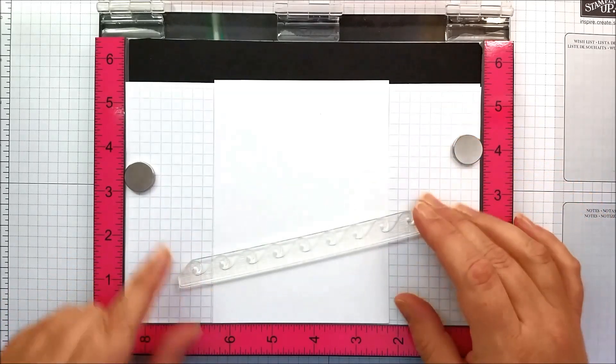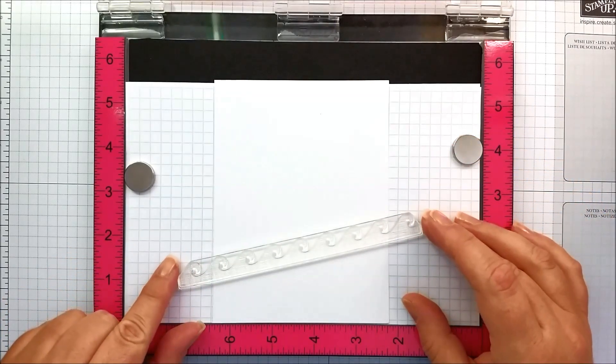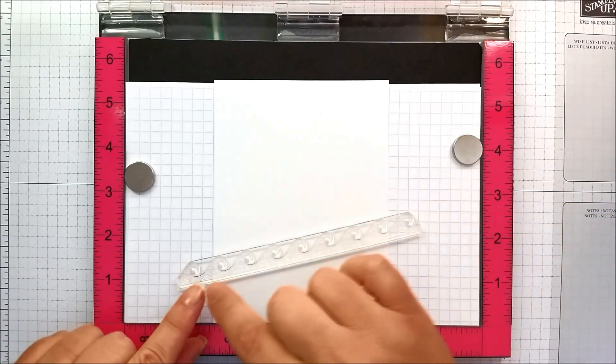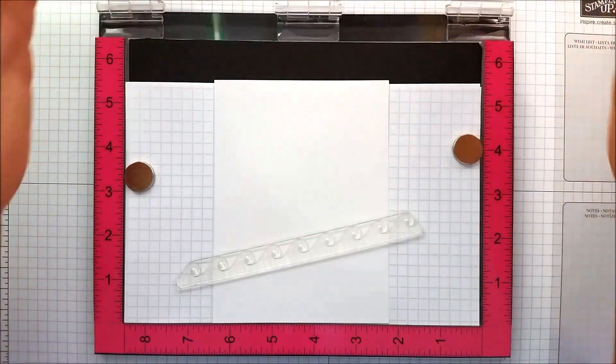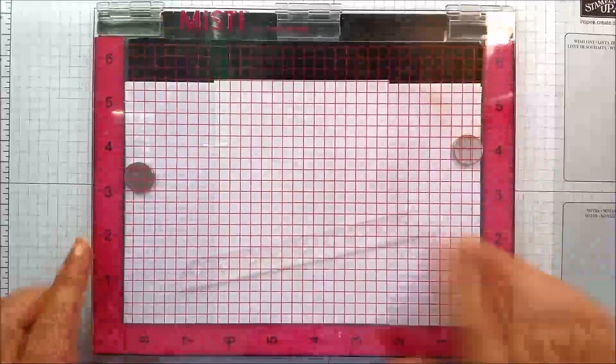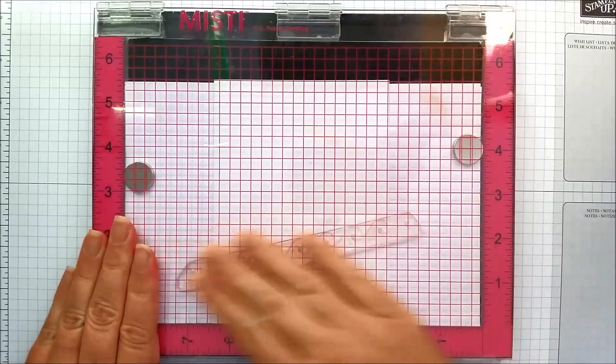We're going to start about there because I want my wave to go on a diagonal across my card, so I'm going to close the lid of my MISTI and press firmly.